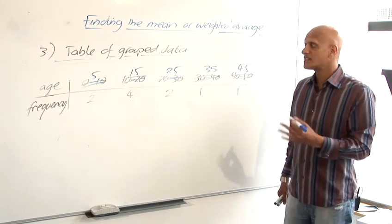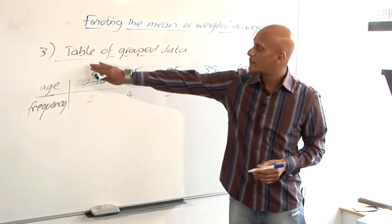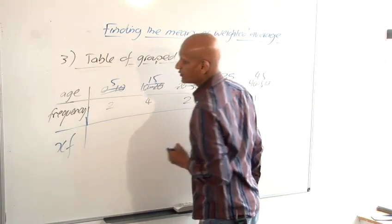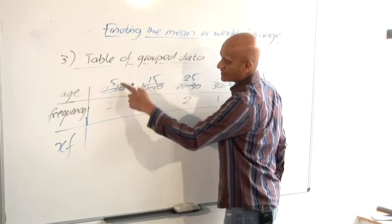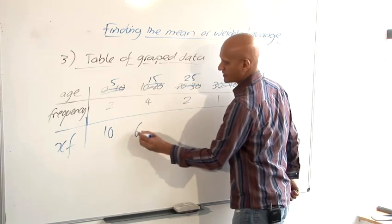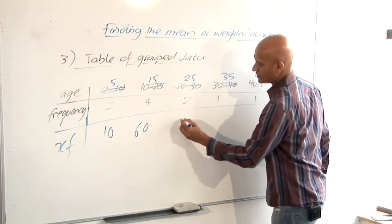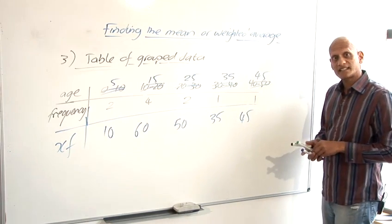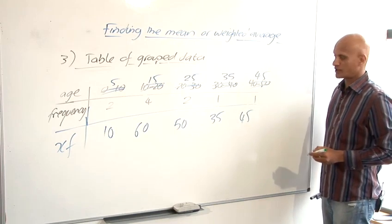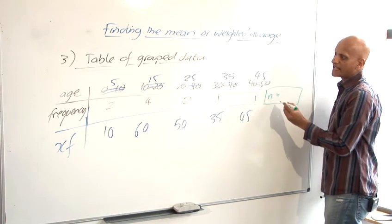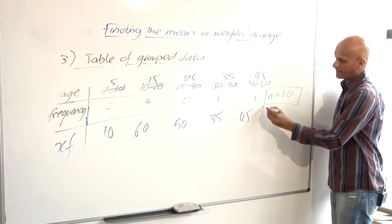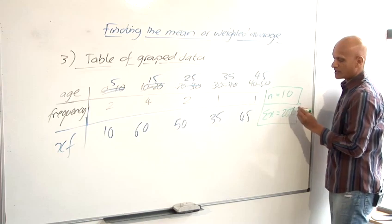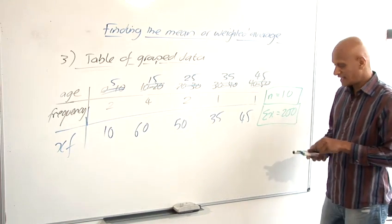Now that we've done that, we're going to treat it just in the same way as we did our table of ungrouped data. So just as before, we now do xf, which is multiplying the x's by the frequency. So 5 times 2 is 10, 15 times 4 is 60, 25 times 2 is 50, 35, and 45. And again, in exactly the same way as we did when we had our table of ungrouped data, we sum up these to tell us n is 10, and we sum up this row to tell us our sigma x is 200, and the mean is calculated in the same way as before.